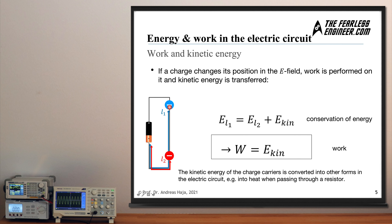Now let's talk about the concepts of work and kinetic energy. If a charge changes its position somewhere in the electric field, we can say that work is performed on this charge and kinetic energy is transferred. Due to the conservation of energy — which states that no energy is lost — the energy at position L1 is composed of the potential energy at position two plus the kinetic energy which the charge now possesses once it has been put into motion by the electric field. So the potential energy at position two is smaller than at position one.